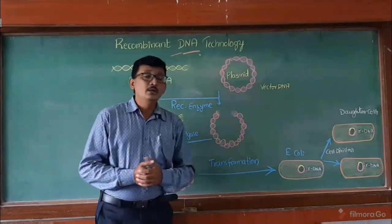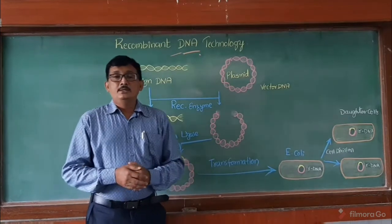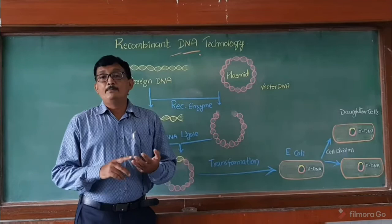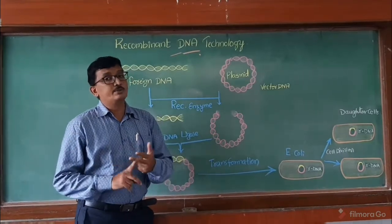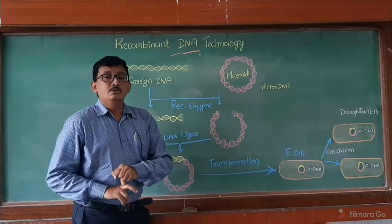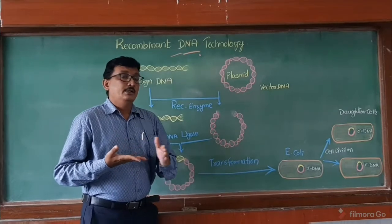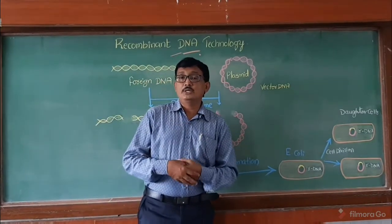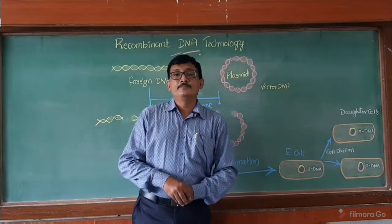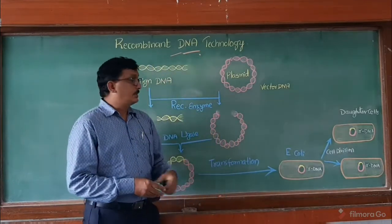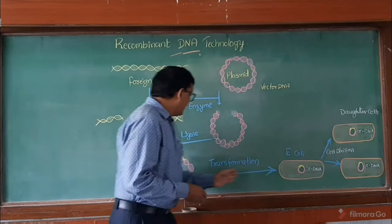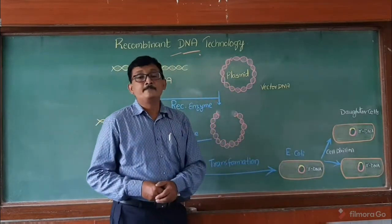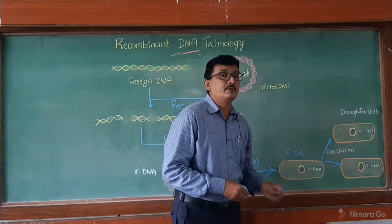After the formation of recombinant DNA, we have to insert this rDNA into a host. What are hosts? The host may be a plant, an animal, or bacteria — whatever it may be. Whenever these recombinant DNAs are inserted into the host, those hosts undergo transformation — they become transformed hosts. For example, if bacteria takes this rDNA, this bacteria undergoes transformation and is called transformed bacteria.